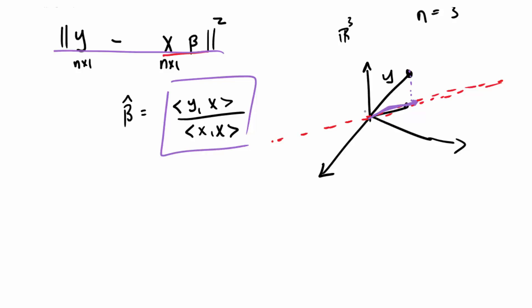So what least squares is doing is it's finding the projection of our point y onto the space that is the constant multiples of the vector x times beta, the constant multiples of x, which we're labeling x times beta.